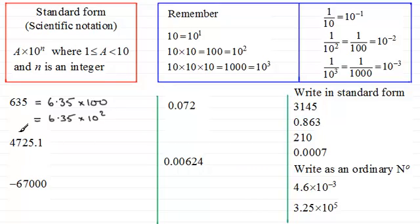Now the next example I've got, 4725.1. So to express this in standard form we need to make this into a number between 1 and 10. So we just say that that is 4.7251. And in order to make this the same as this number, I need to move the point from here 3 places to behind this 5, which is the same as multiplying by 1000. And 1000 is the same as 10 to the power 3. So we've got 4.7251 times 10 to the power 3.